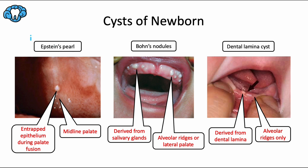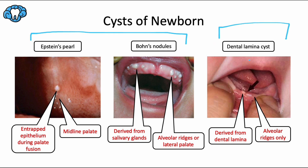By the way, these first two are collectively referred to as palatal cysts of the newborn, while the last one here is considered a gingival cyst of the newborn because it primarily occurs on the gingiva. This is the dental lamina cyst — it's called that because it's derived from the dental lamina, which is the first layer of a forming budding tooth in the odontogenesis process. The first two cysts are considered non-odontogenic, while this last one is technically odontogenic, meaning it develops from embryonic tissue involved in tooth development.